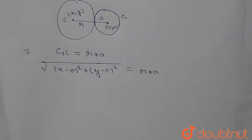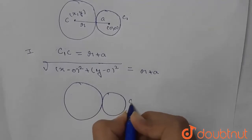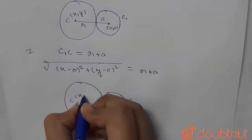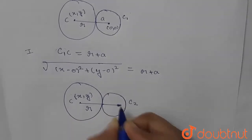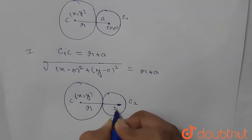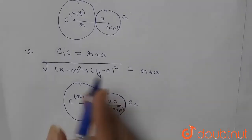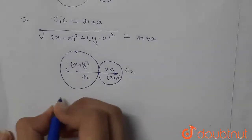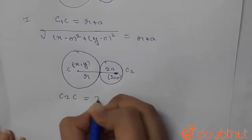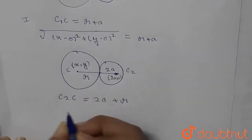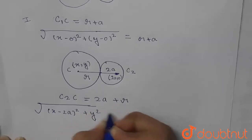Using the distance formula, C₁C = √(x² + y²) = r + a. This is the first condition. For the second condition, the same circle with center (x, y) and radius r touches circle C₂ centered at (2a, 0) with radius 2a externally. So the distance C₂C = 2a + r, giving us √((x − 2a)² + y²) = 2a + r.